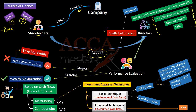These shareholders who have appointed the directors may want to evaluate their performance — whether they have performed well or not. To evaluate performance, we have two approaches. First is profit maximization, which is based on profits of the company — it is not a good approach. The other approach is wealth maximization, which is based on real cash flows of the company and is a better approach.